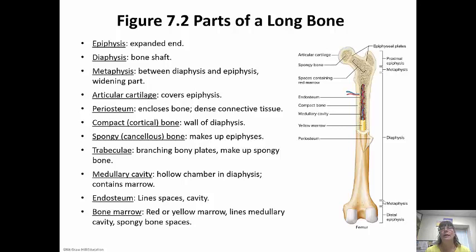The trabeculae are branching bony plates inside the spongy bone that basically make it up. The medullary cavity is the hollow chamber in the diaphysis going all the way down the shaft — this contains our bone marrow. The endosteum is the membrane that lines the cavity. Bone marrow is either red or yellow and lines the medullary cavity and spongy bone spaces.